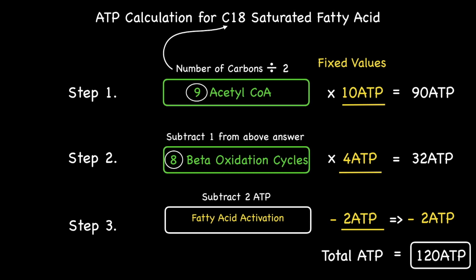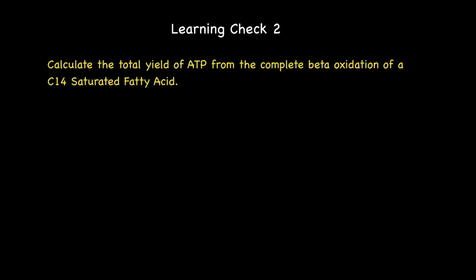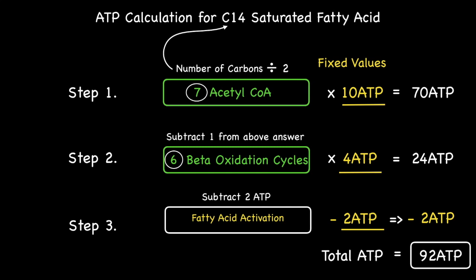Let's now move on to the second and final learning check. Calculate the total yield of ATP from the complete beta-oxidation of a C14 saturated fatty acid. Don't forget to include the steps in your calculation. Pause the video and come back once you have an answer. Here is the model answer to the second and final learning check.